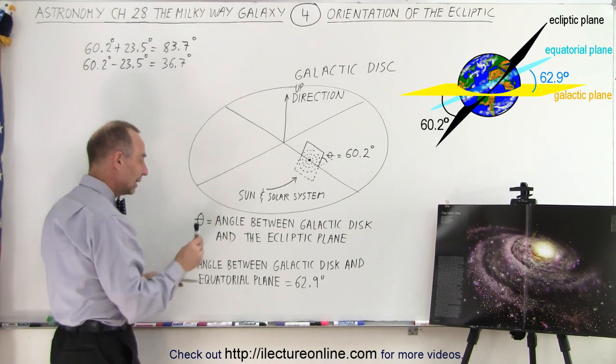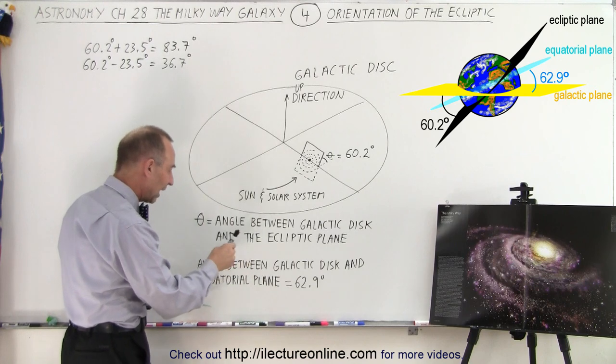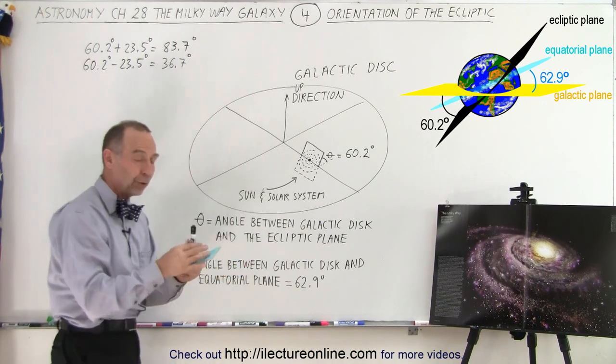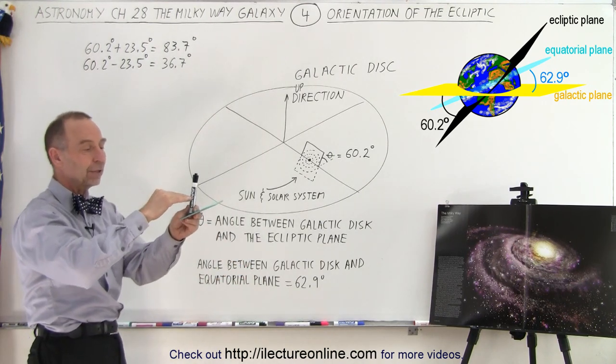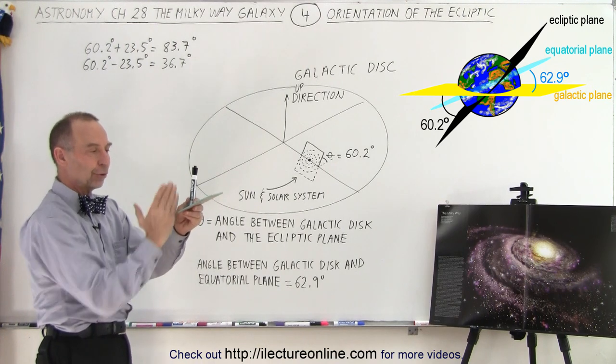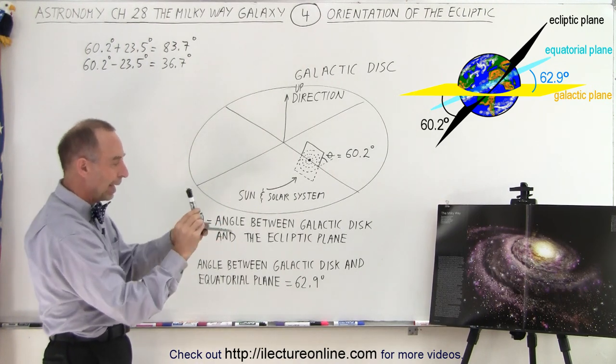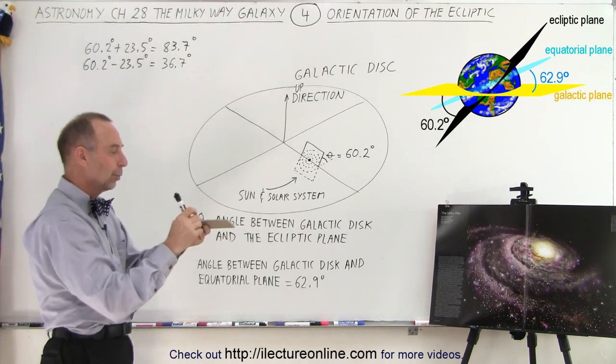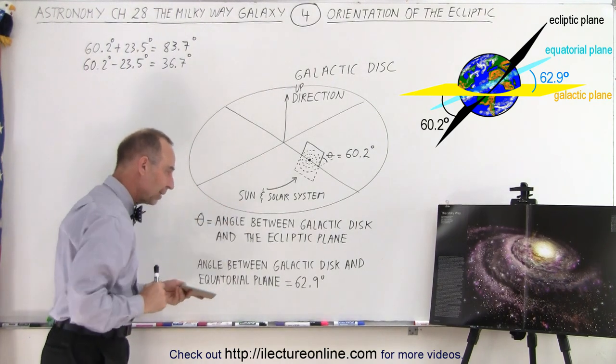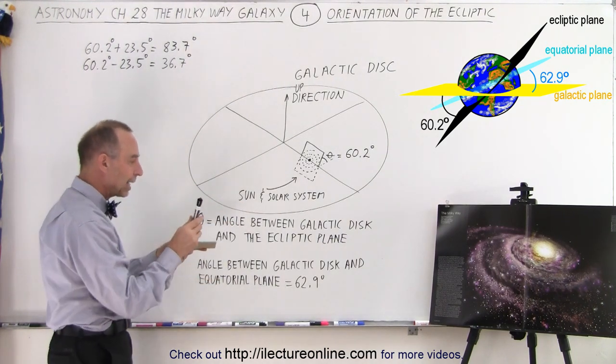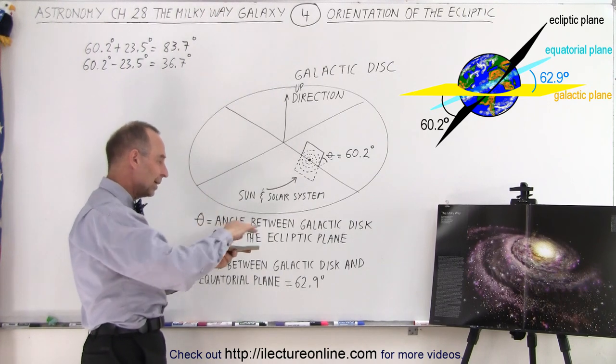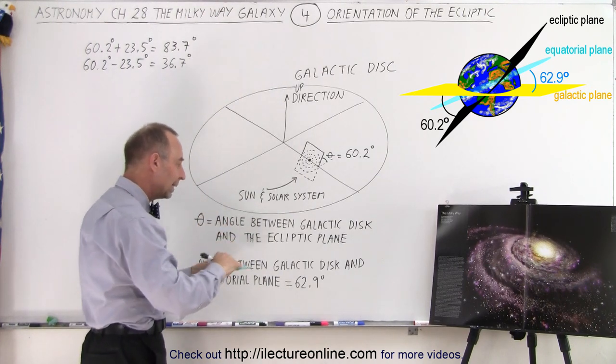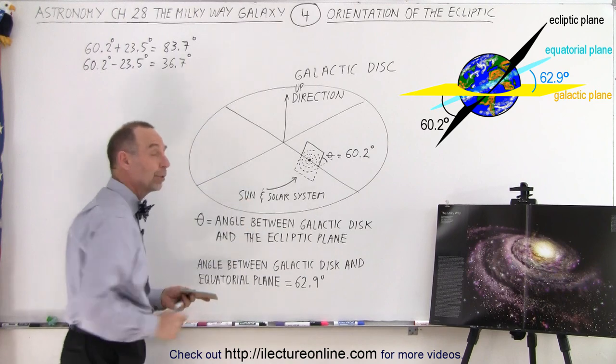So the relative position of the actual tilt to the ecliptic plane changes continuously from year to year. It turns out that currently the angle between the galactic disk and the equatorial plane—the equatorial plane is perpendicular to the axis of the Earth from the North Pole to the South Pole—swivels around relative to the ecliptic plane.